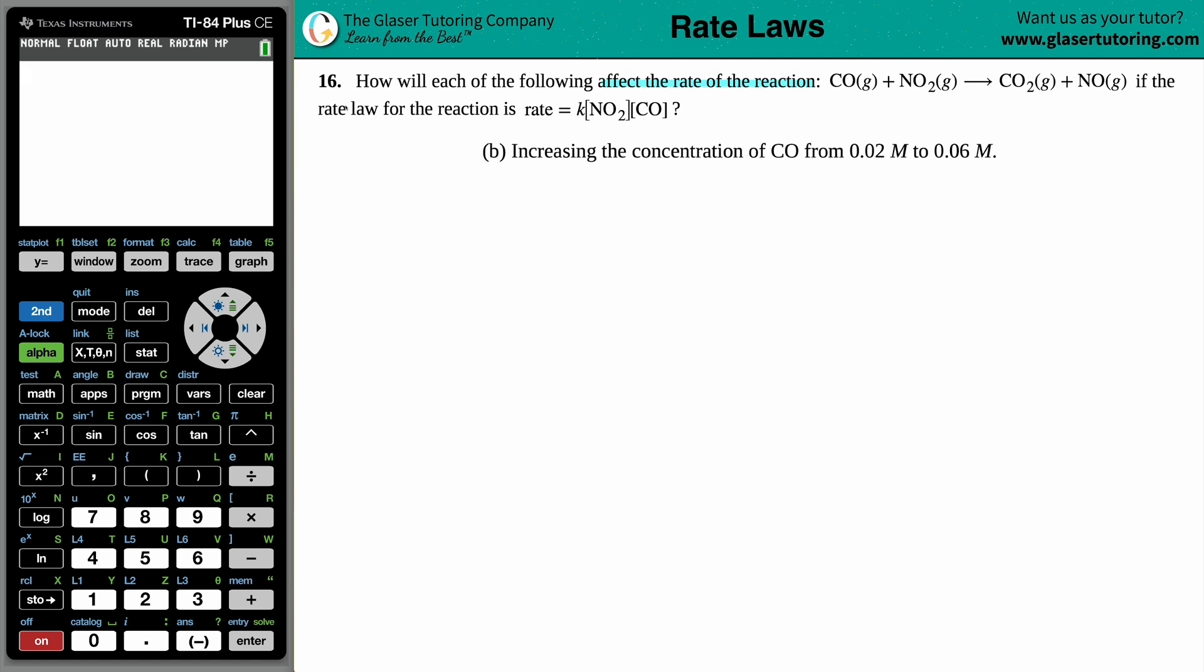If the rate law for the reaction is rate equals K times the concentration of NO2 times the concentration of CO. So let's write down that rate law. We got rate equals K, which is the rate constant, times the concentration of NO2 times the concentration of CO.